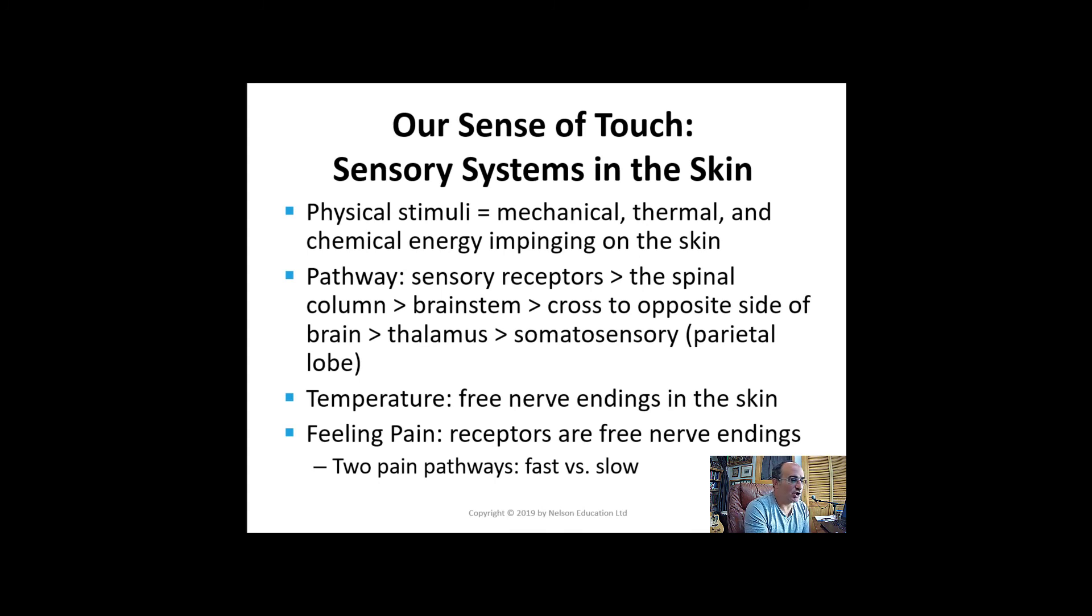Our sense of touch: the physical stimuli for touch are mechanical, thermal, and chemical energy that impinges on the skin. The skin has at least six types of sensory receptors which are routed through the spinal column to the brainstem. There they cross over mostly to the opposite side of the brain and project through the thalamus and onto the somatosensory cortex in the parietal lobe. Temperature is registered by free nerve endings in the skin that are specific for cold and warmth. Pain receptors are also mostly free nerve endings which transmit information to the brain via two types of pathways: the fast pathway that registers localized pain relays it to the brain in a fraction of a second, and the slow pathway that lags a second or two behind that carries less localized, longer lasting aching or burning pain.